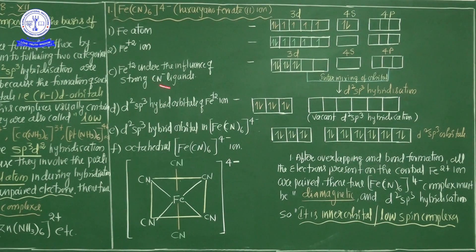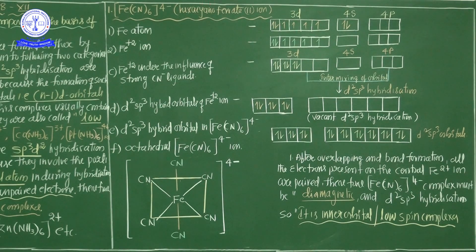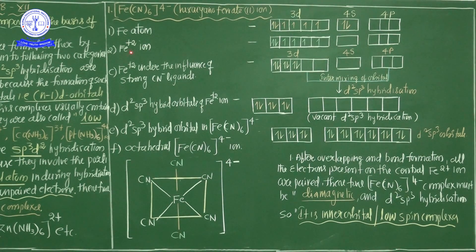In this compound, the oxidation state of iron is +2. Therefore, iron is present as Fe²⁺ ion. The electronic configuration of iron in the ground state is 1s², 2s², 2p⁶, 3s², 3p⁶, 3d⁶, 4s².